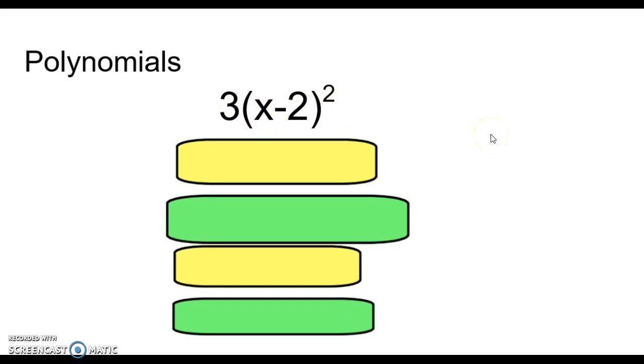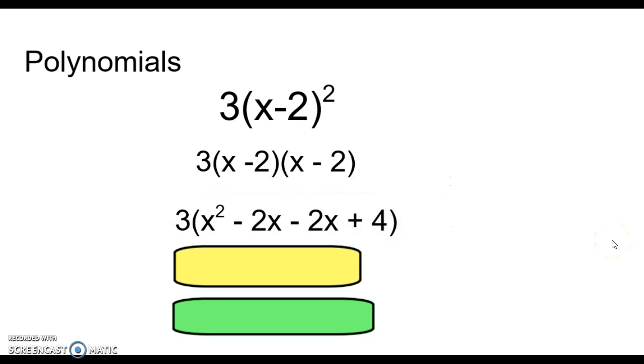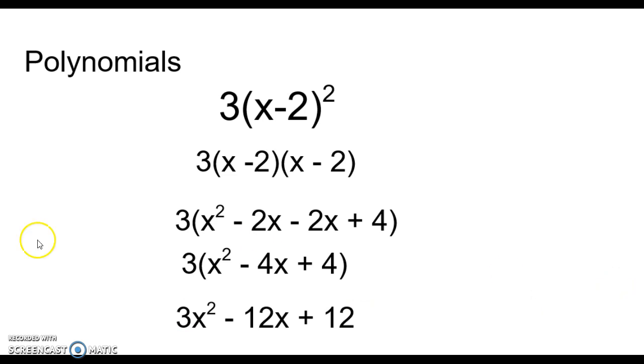The first thing I would do is rewrite it so I don't have an exponent. I would write that set of parentheses out twice. Next, I would multiply these two sets of parentheses. Getting this answer, combining like terms, and the final step would be to distribute that three. So this would be your answer.